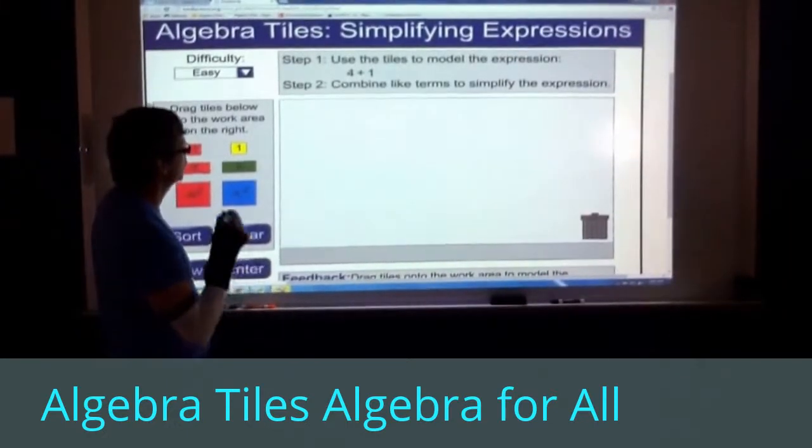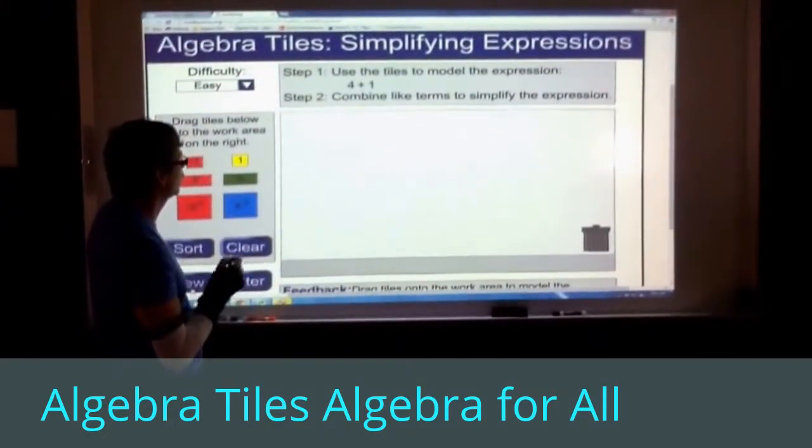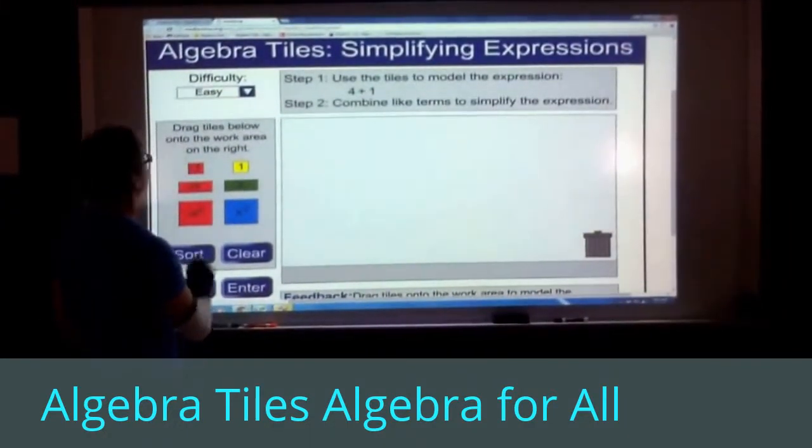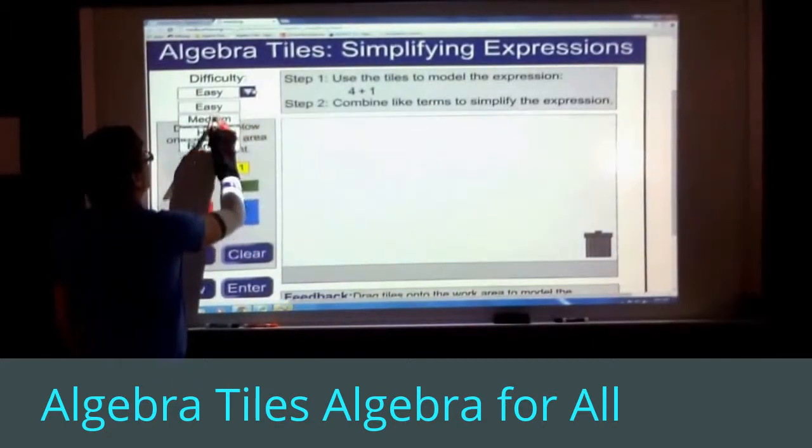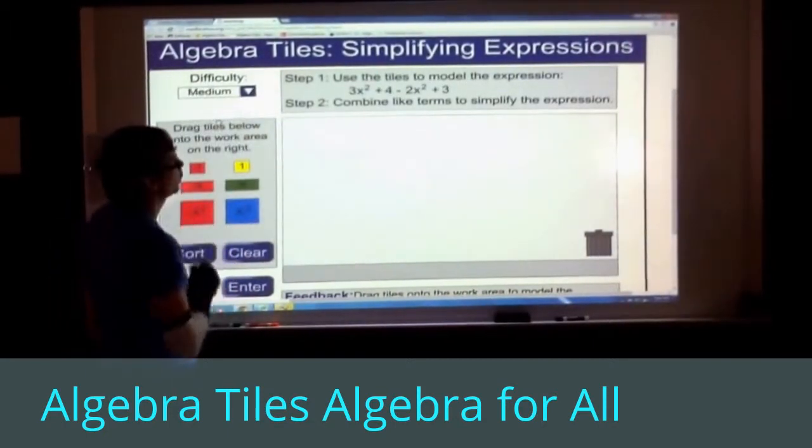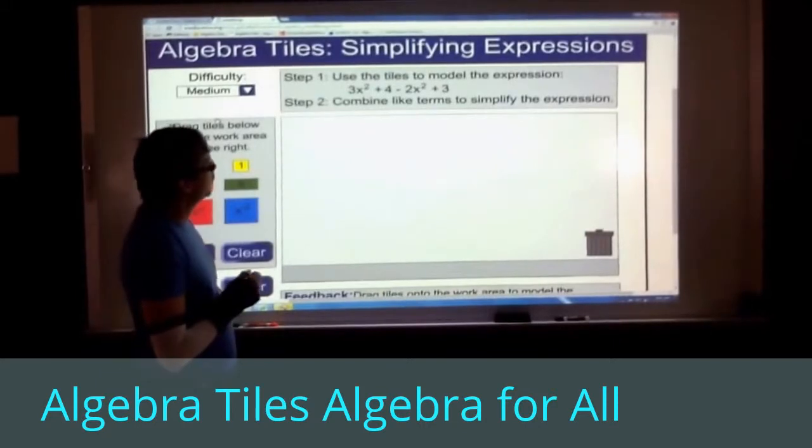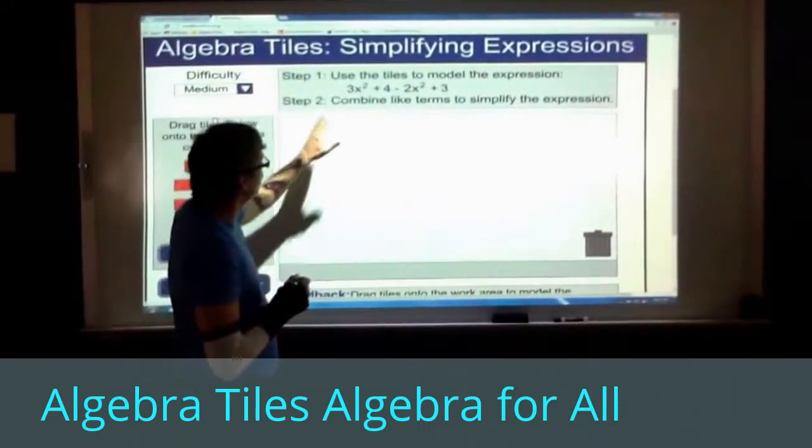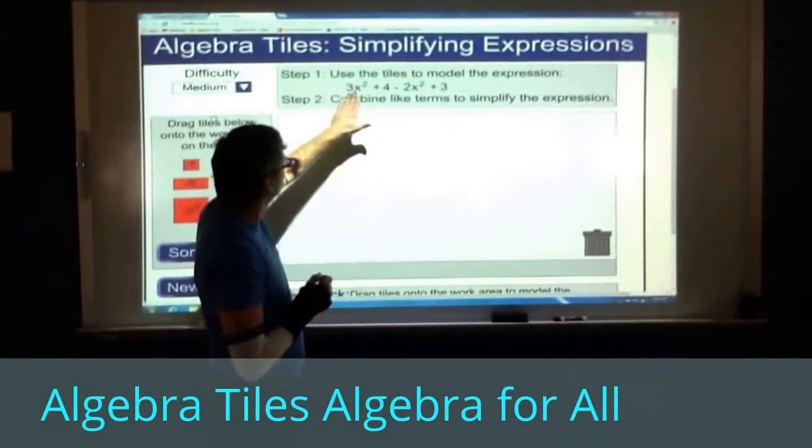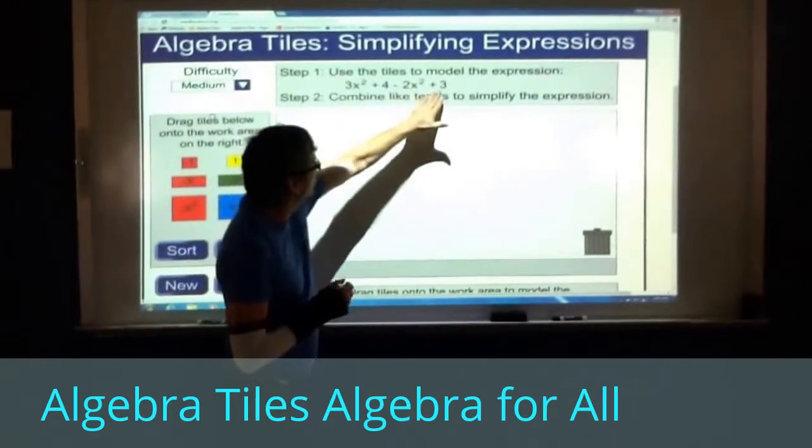4 plus 1, we can model that, and of course we would get 5. Let's look at a little harder example. We'll go to medium. So medium jumped up a little bit on me here. I've got a lot of terms. I have 1, 2, 3, 4 terms.